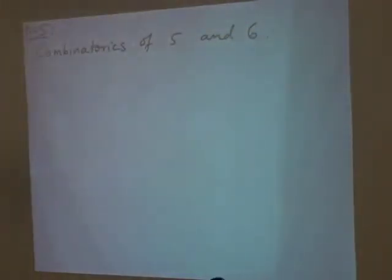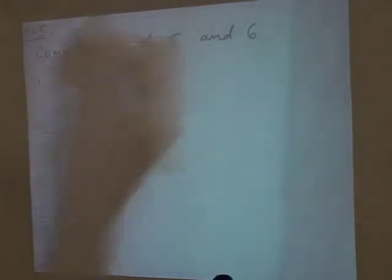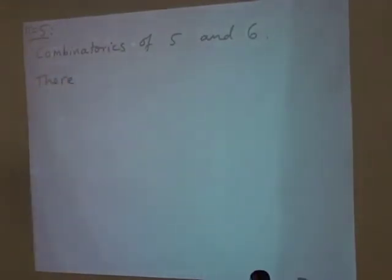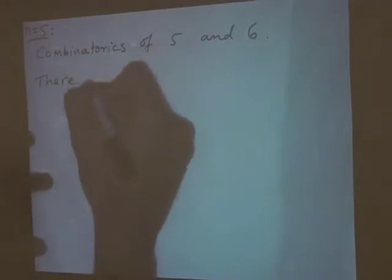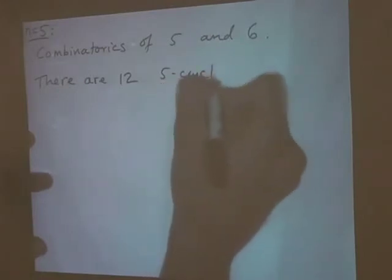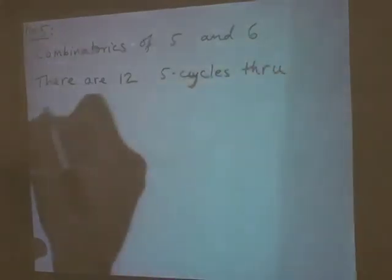So I want to begin by talking about the combinatorics of five and six, since this is something that's not quite as obvious. How does one get six things from five things? First there's a natural way to get 12 things from five things. If you look at the complete graph on five vertices, you can look for five-cycles in that complete graph going through all five of the vertices. There are 12 five-cycles through five points.